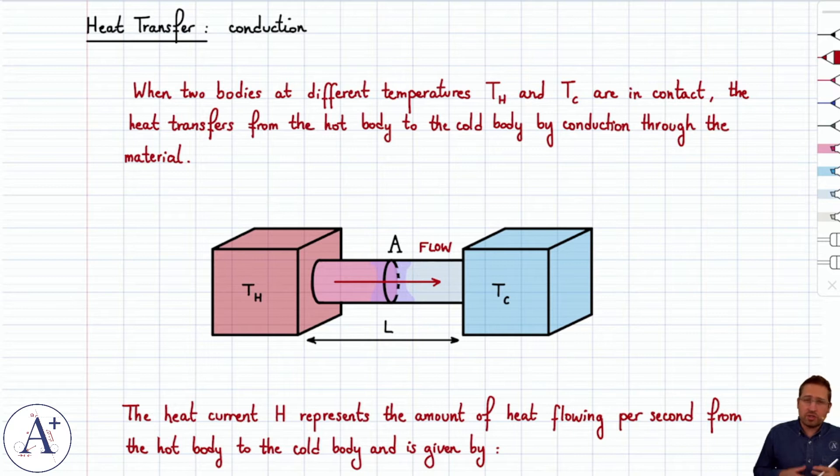And what we're going to try to do is quantify how much heat flows from the hot body to the cold body per second, given a cross-sectional area, a certain length, and a certain type of material through which conduction occurs.